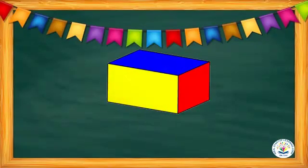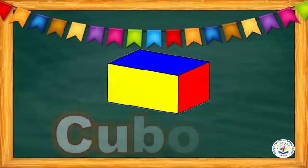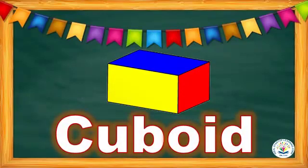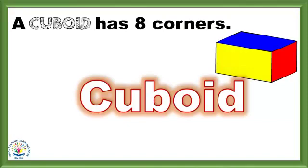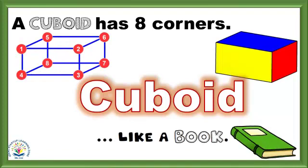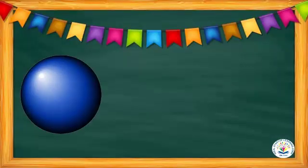What shape is this? It is a cuboid! C-U-B-O-I-D. Cuboid. Say with me: cuboid! A cuboid has eight corners, and it looks like a book.